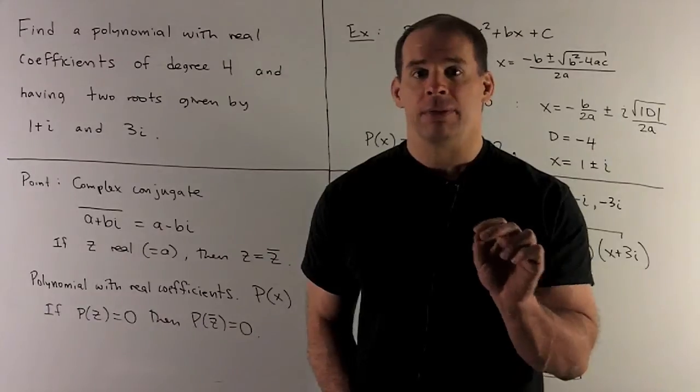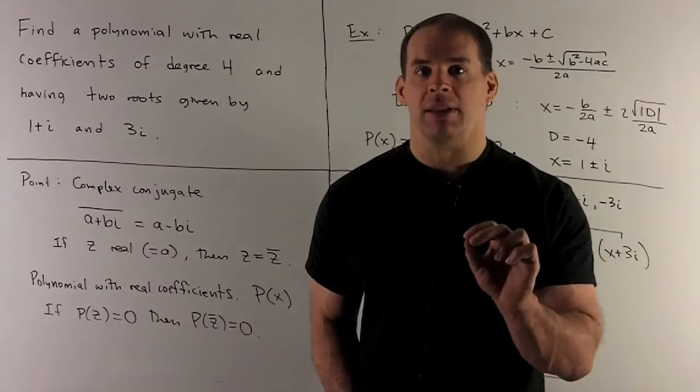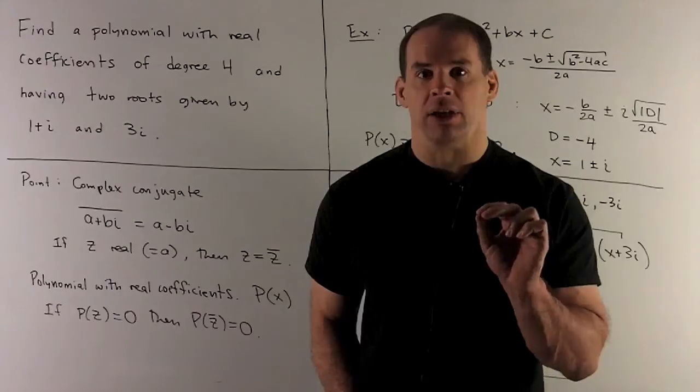If a root is real, we take its complex conjugate, we do nothing. We just get the same root back. So for real roots, this doesn't really give us any idea of how to get new ones.